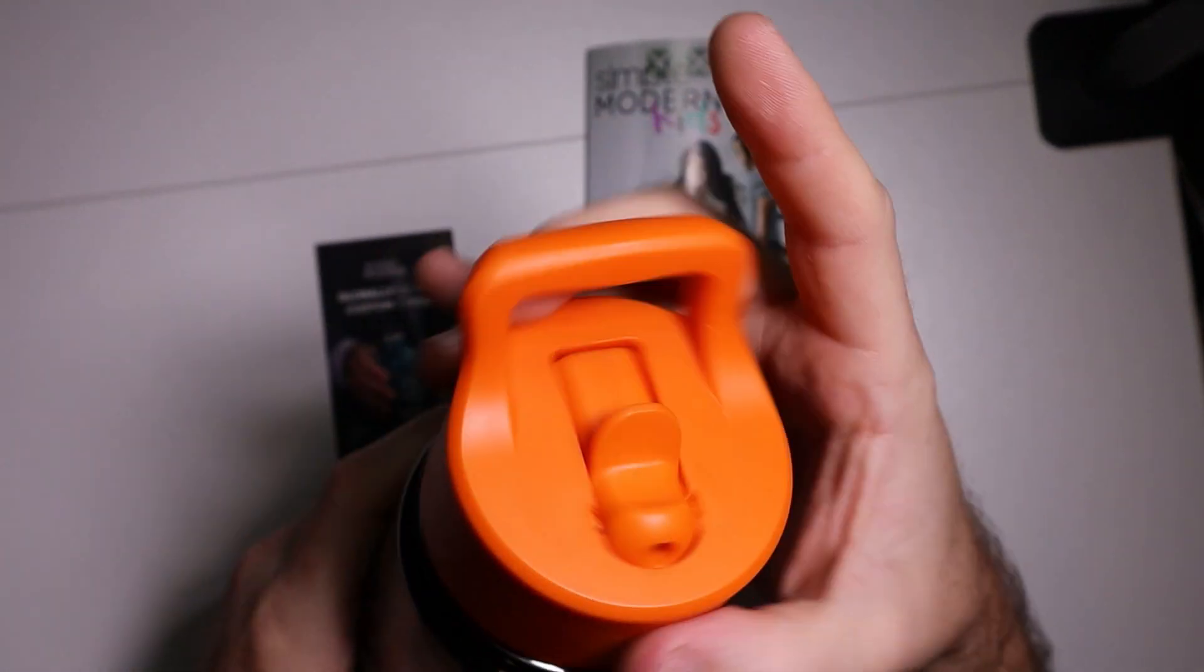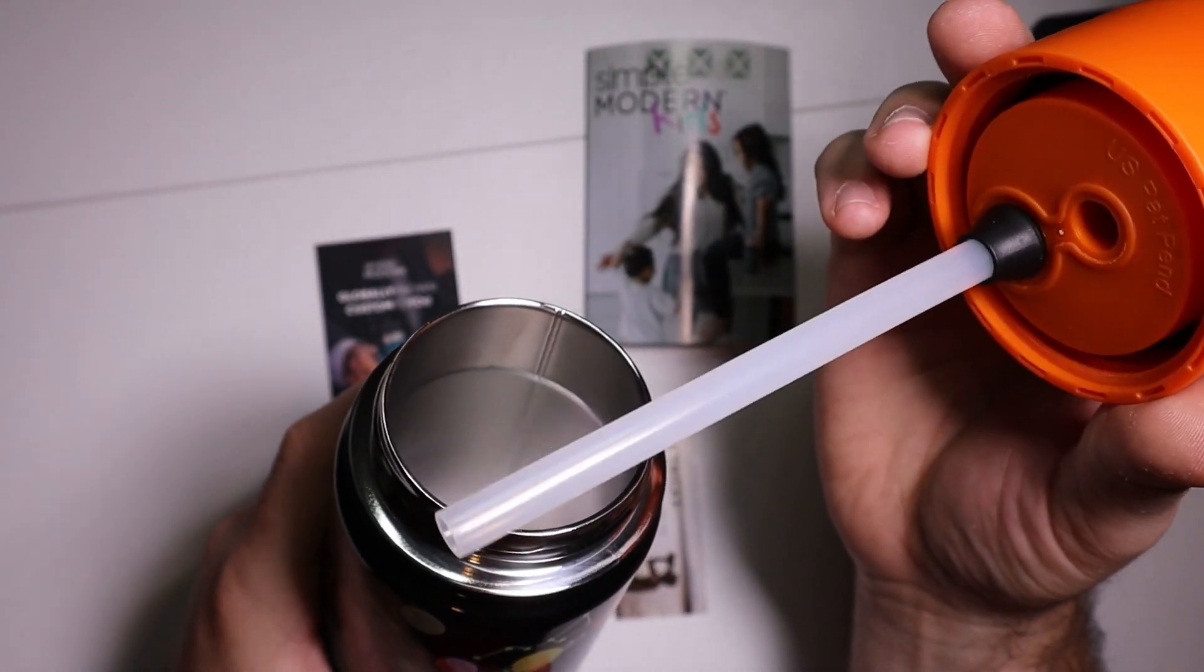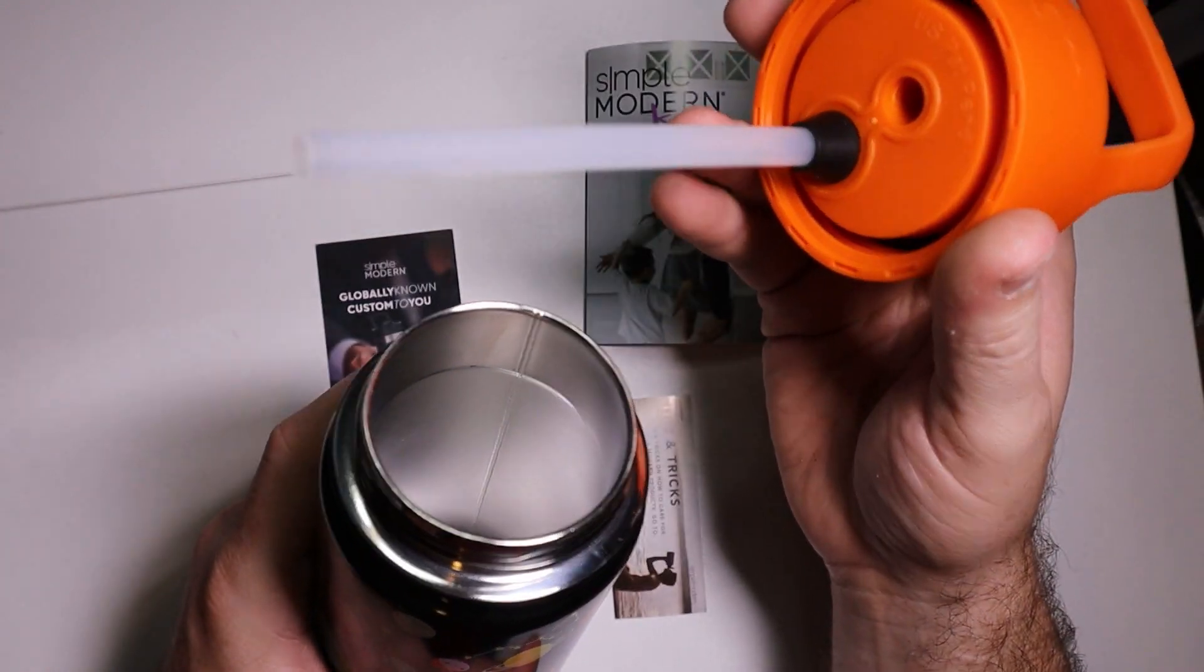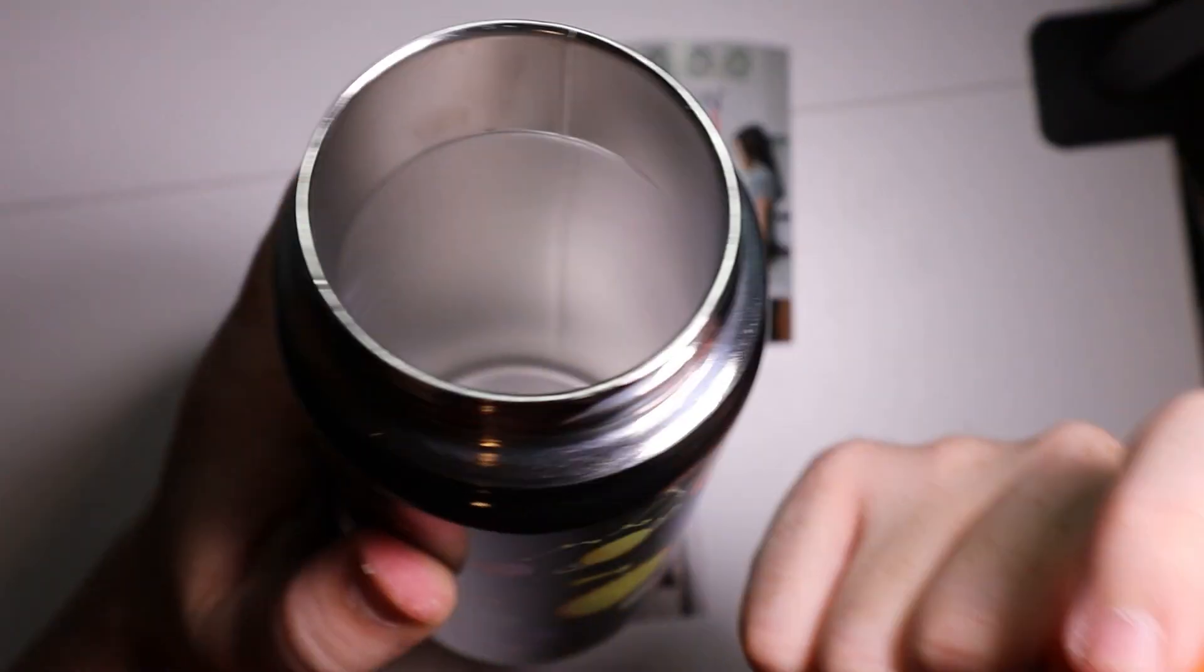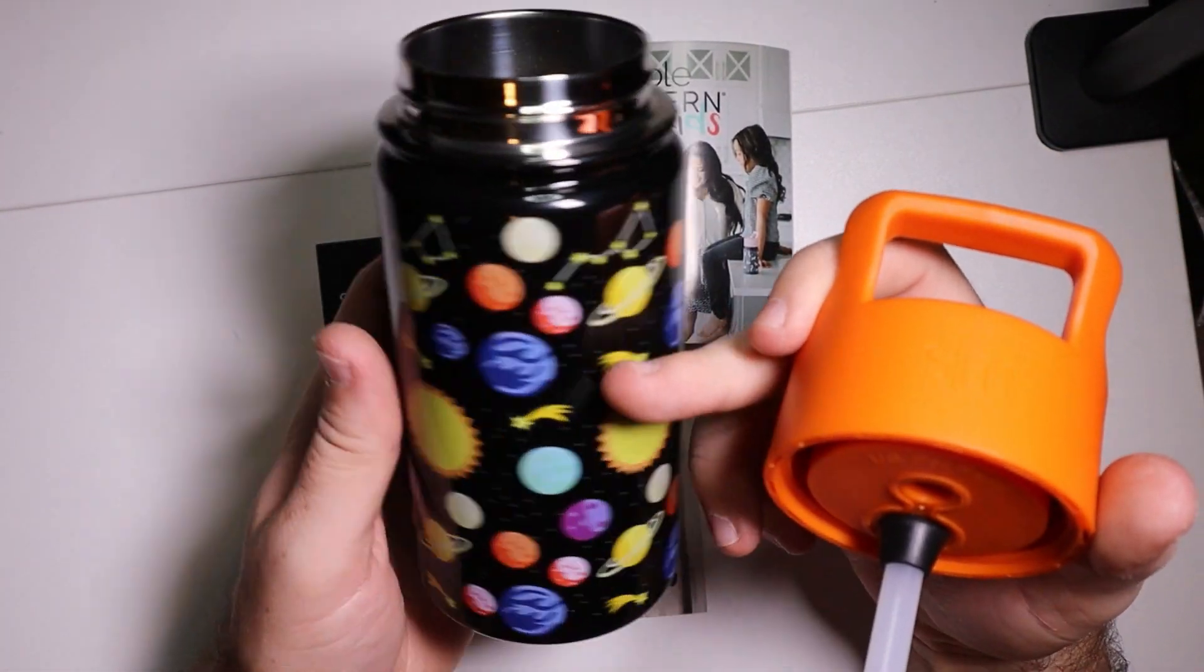The straw on the inside is all supposed to be BPA free and it's supposed to be leak proof. So this is a pretty nice bottle. It is all metal and it does come in a few different designs.